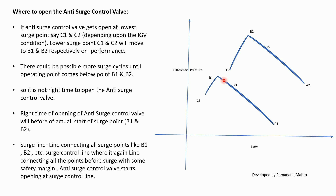Coming from C1 to below B1, or from C2 to below B2, takes some time, during which more surge cycles can occur — because that region is still the surge zone, not the safe zone. So opening the anti-surge control valve at the surge point itself is not the right time. The correct approach is to open the anti-surge control valve before the actual surge starts — that is, before reaching B1 and B2. Connecting B1, B2, and all corresponding points forms the surge line, and adding a safety margin to those points forms the surge control line.